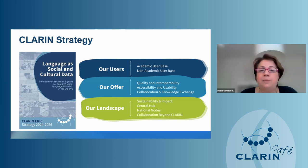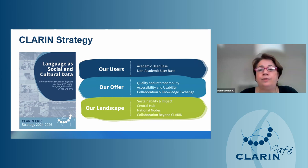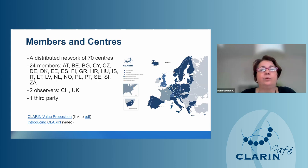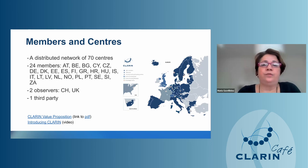CLARIN has a central hub and national nodes at member states, and we further collaboration beyond CLARIN with other infrastructures and initiatives. We have a distributed network of 70 centers in 24 member countries plus two observer countries and one third party in the USA. More information is available on the CLARIN website; the slides will be shared afterwards.